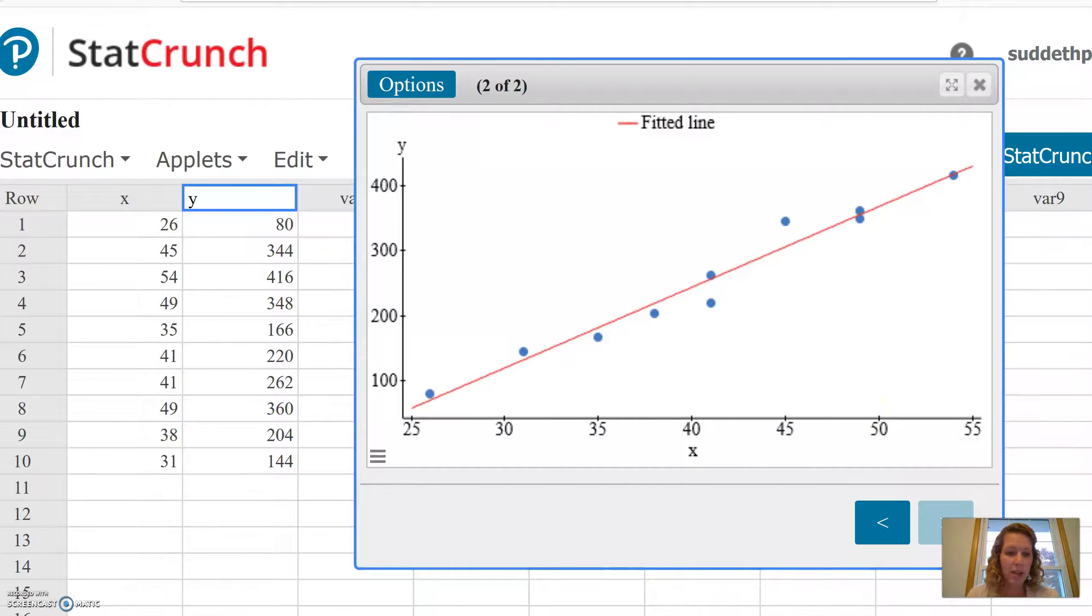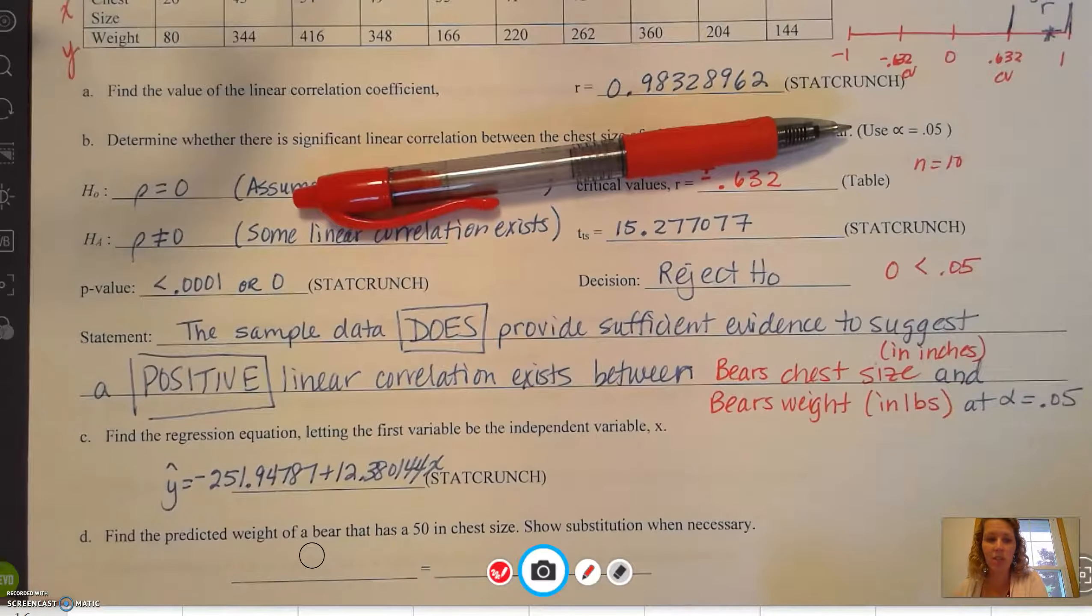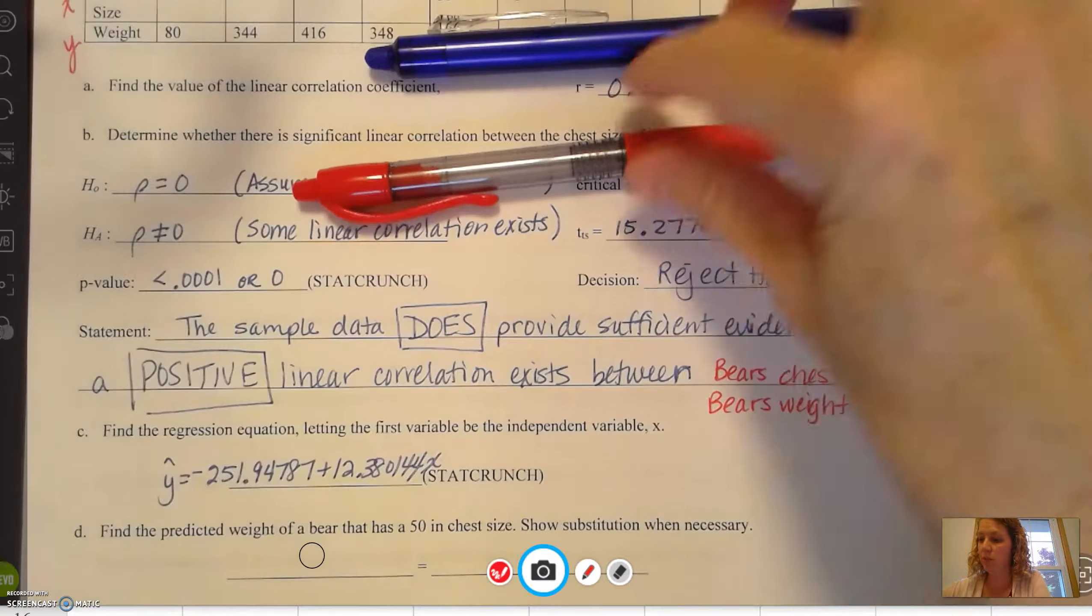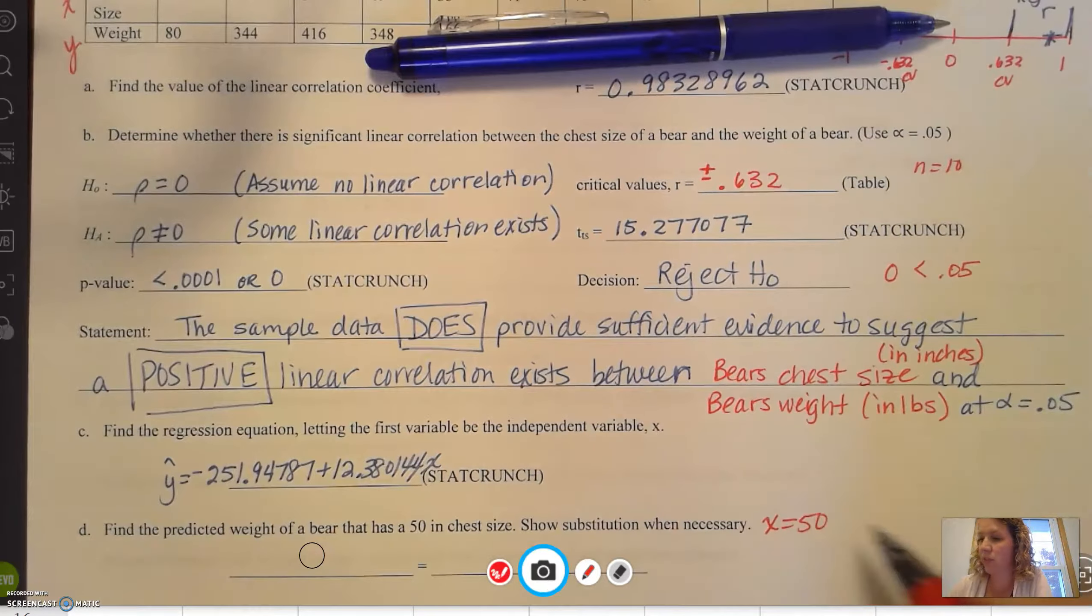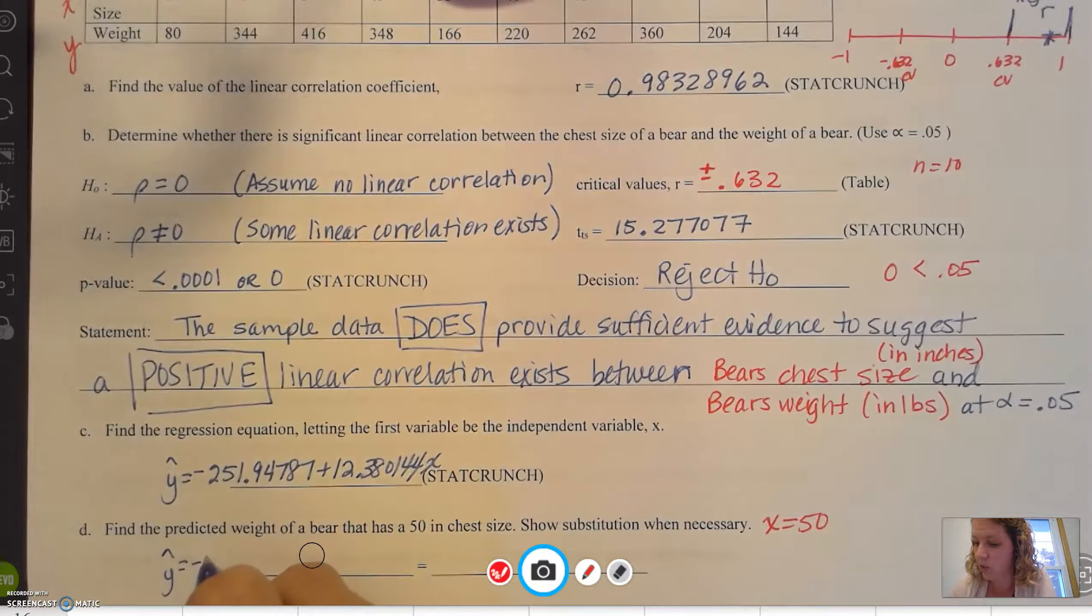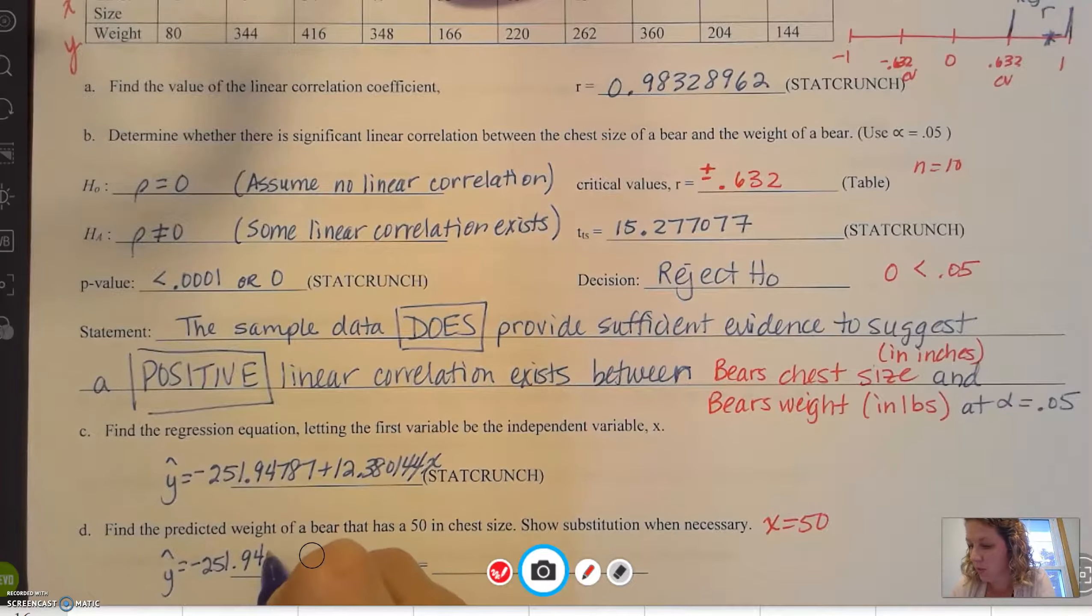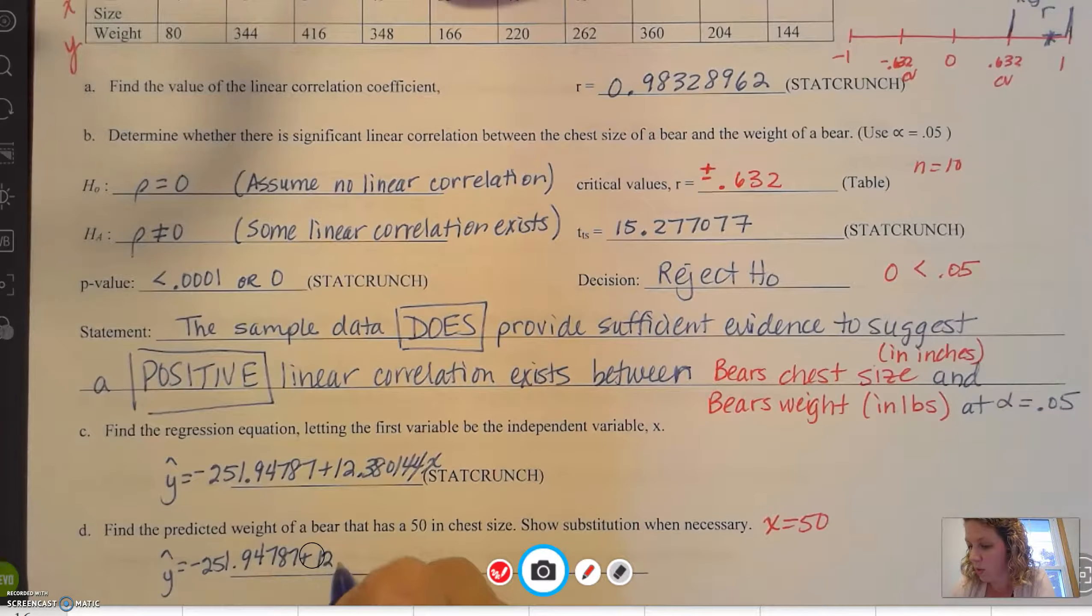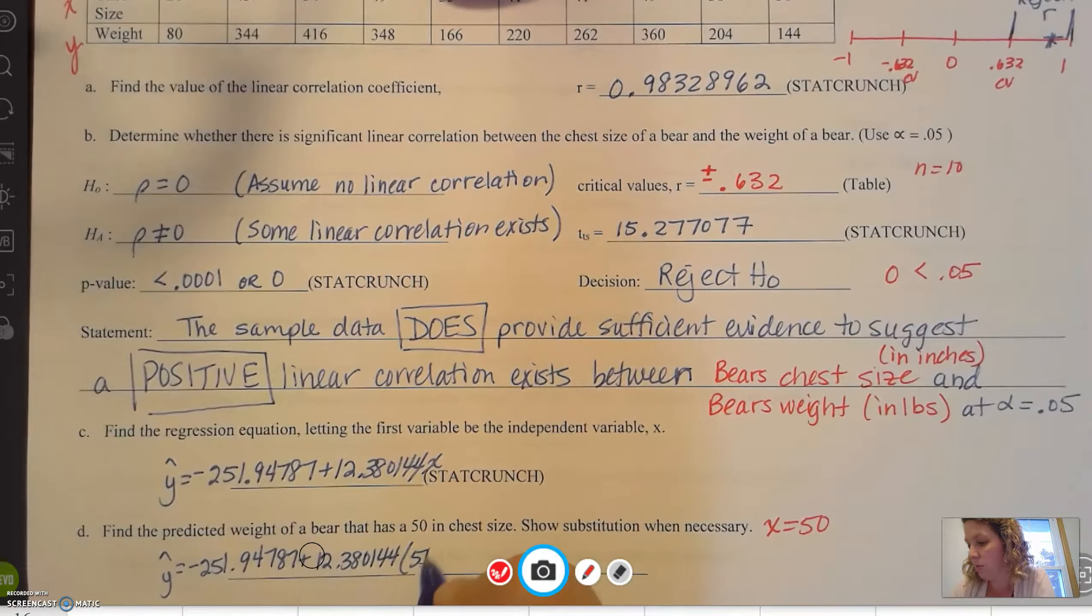Let's go back and find the predicted value. The last question says, find the predicted value of a bear that has a 50 inch chest size. Show substitution. So here, this is indicating that x is going to be 50. I'm going to show the substitution. ŷ = -251.94787 + 12.380144 times 50.